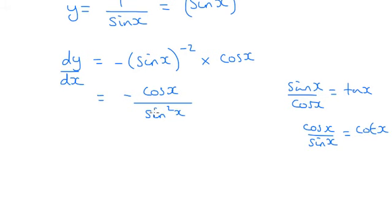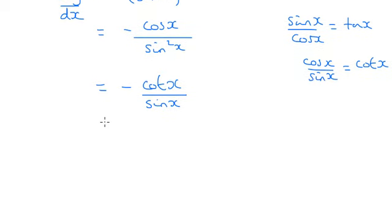So I can take out the cos x over sine x, and change that to a cot x. So I've now got minus cot x. I've still got a sine x on the bottom. But like we said right at the beginning of the question, a 1 over sine x is the same as a cosec x. So we've got minus cosec x, cot x.